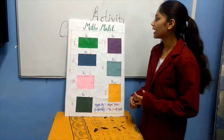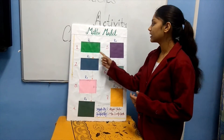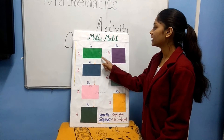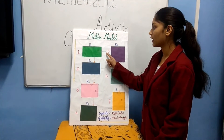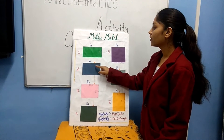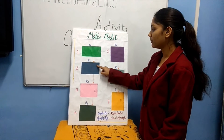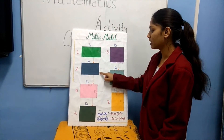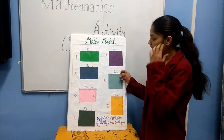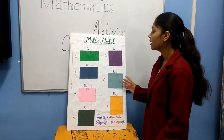Here I have put 7 rectangles of different dimensions with the same perimeter. R1 has a length of 16cm and breadth of 8cm, giving an area of 128cm squared. With each rectangle, the length decreases by 1cm and breadth increases by 1cm. So R2 has a length of 15cm and breadth of 9cm.